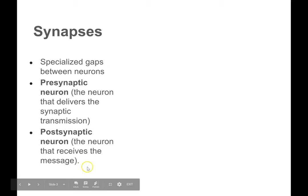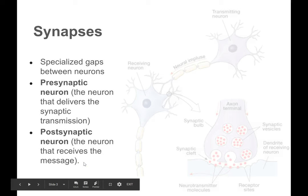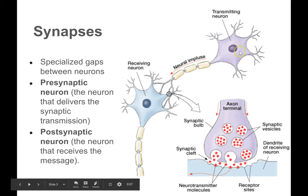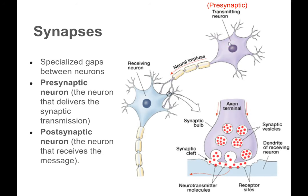The post-synaptic neuron is the one that's receiving the message. If we look at this diagram, this is the transmitting neuron or the pre-synaptic neuron, and this is the post-synaptic neuron, the one receiving the message. With regard to these synapses, these points of communication, this one comes before and this one comes after in terms of the direction of information flow.